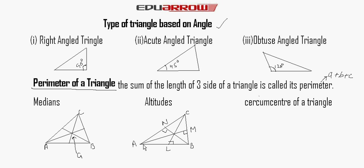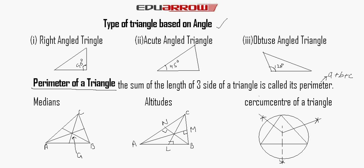Circumcenter of a triangle. The point of intersection of the perpendicular bisectors of the sides of a triangle PQR is called the circumcenter of triangle PQR.